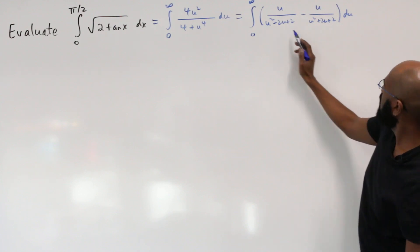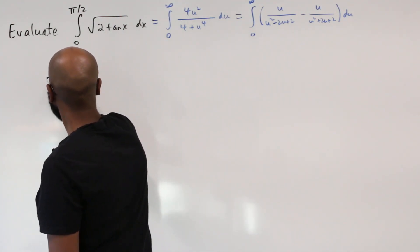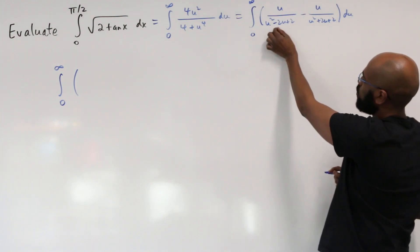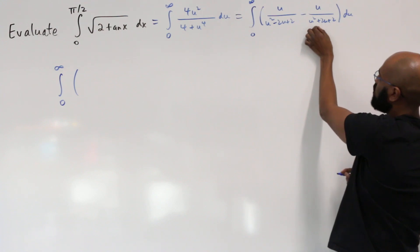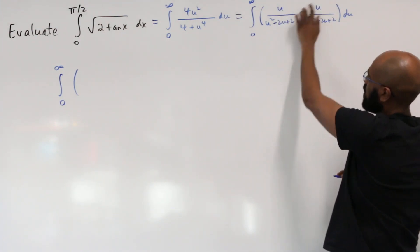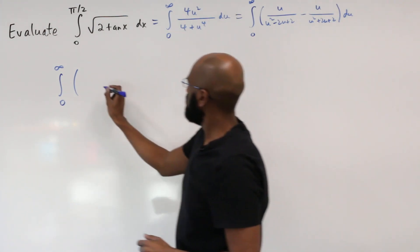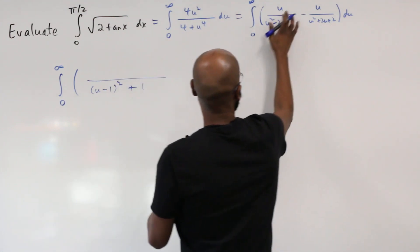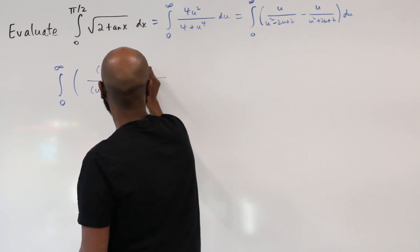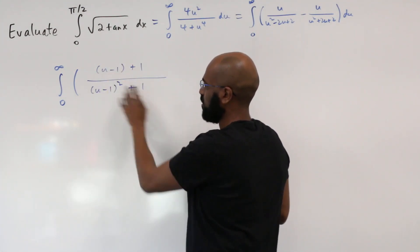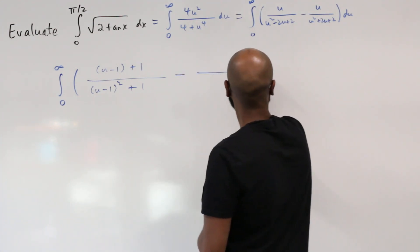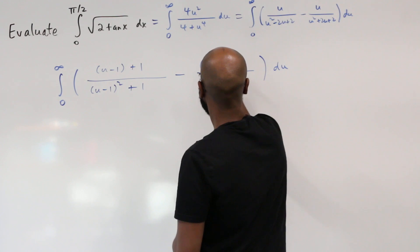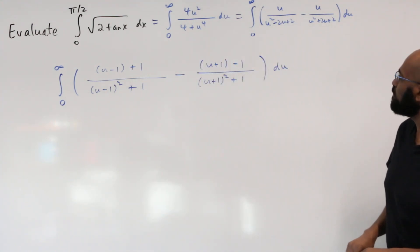We take this step by step. First, we complete the square in each denominator: u² − 2u + 2 = (u−1)² + 1 and u² + 2u + 2 = (u+1)² + 1. We then rewrite the corresponding numerators: u = (u−1) + 1 for the first fraction, and u = (u+1) − 1 for the second. This makes the integrals more manageable.